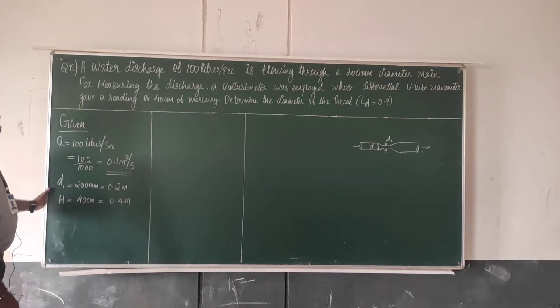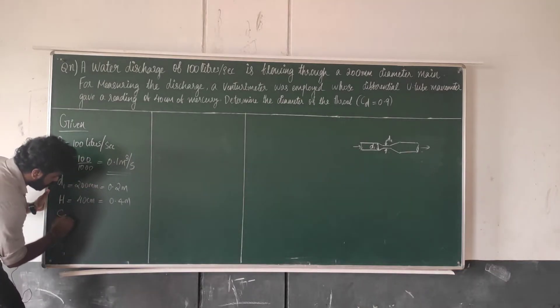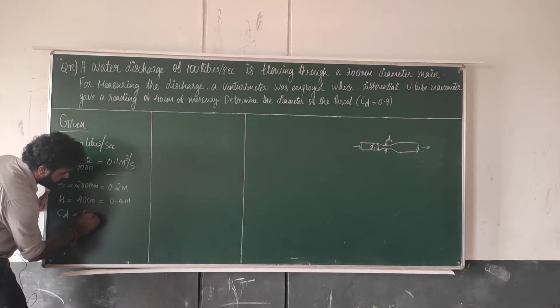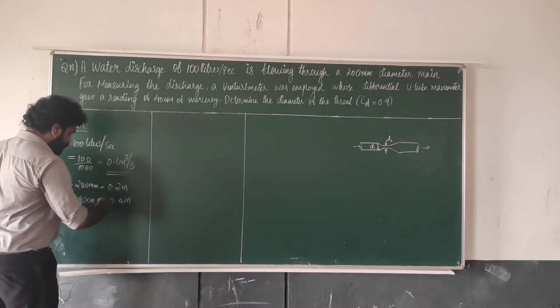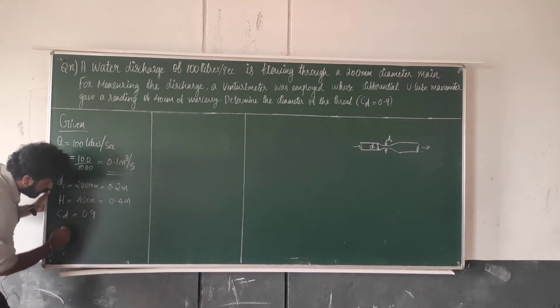The CD value is 0.9. Now we will calculate the required values.